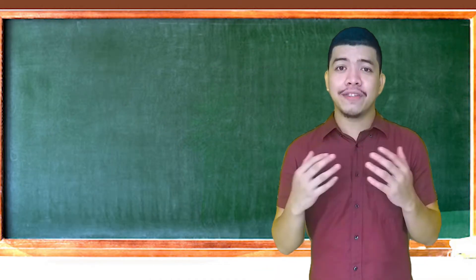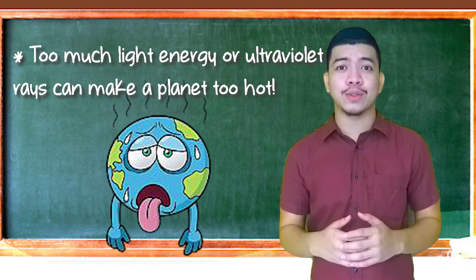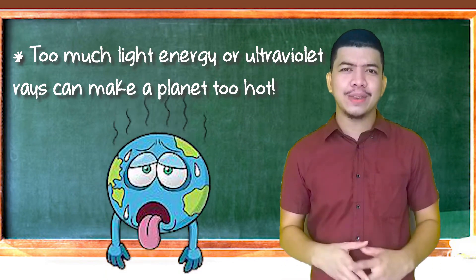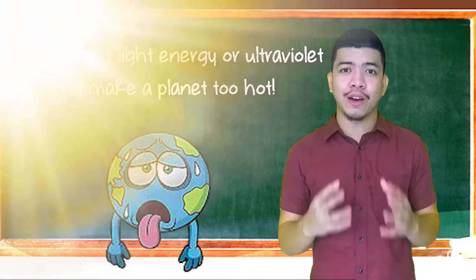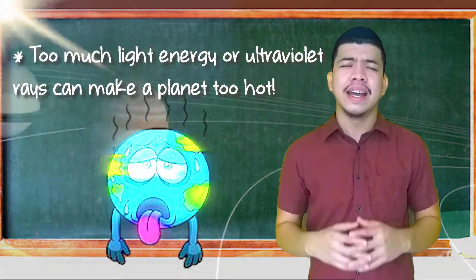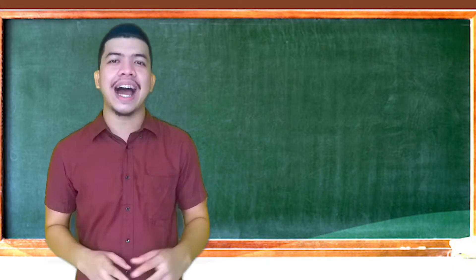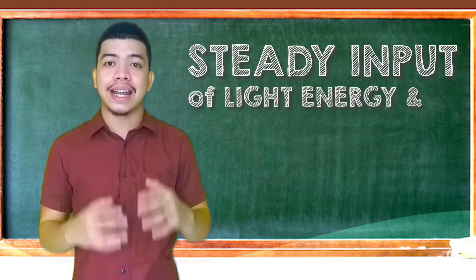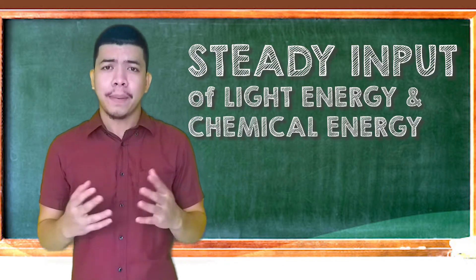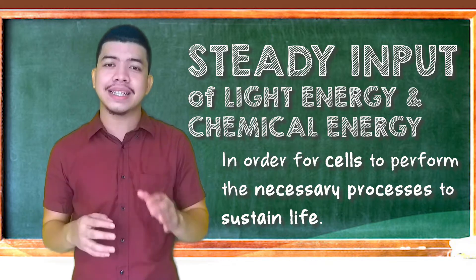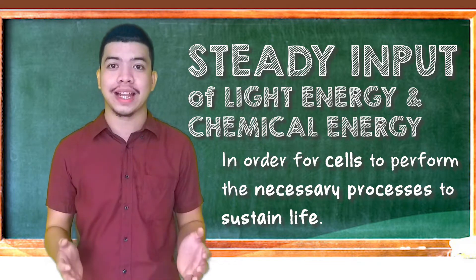Problema rin naman if light energy makes the planet too hot or kung masyadong marami tayong nareceive ng particle rays na rin ang muna base. This is true sa mga inner planets kasi nga they are closer to the sun. Tandaan, for life to exist, ang kailangan lang natin ay steady input ng light or chemical energy para magawa ng mga cells ang mga necessary chemical reactions to support life.